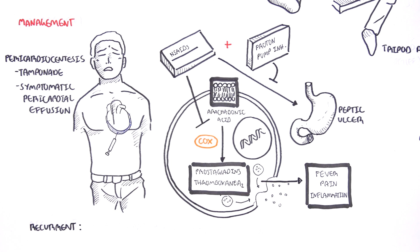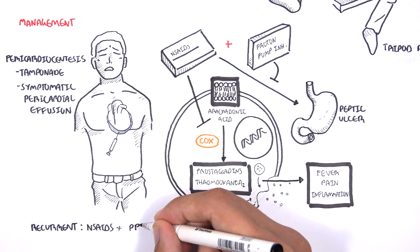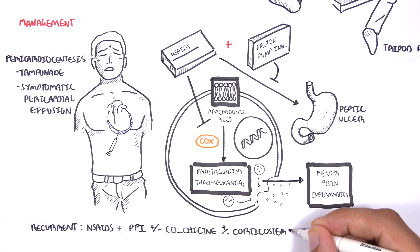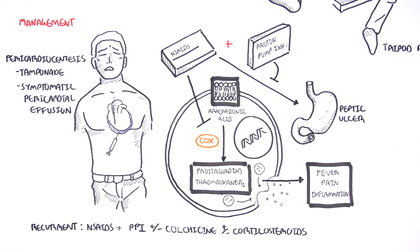In recurrent pericarditis, patients can go on nonsteroidal anti-inflammatory drugs, proton pump inhibitors, plus or minus colchicine, which is a common med for gout, and plus or minus corticosteroids for serious cases.